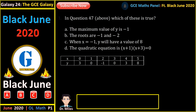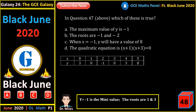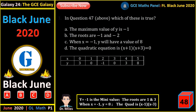In the previous question, which of these is true? The maximum value of y is minus 1 — this is not true because y equals minus 1 is the minimum value. The roots are 1 and 3, not minus 1 and minus 2 as stated. When x is minus 1, from symmetry, y must equal 8. The statement that the quadratic has roots x plus 1 and x plus 3 equals 0 is false — the roots are (x minus 1)(x minus 3) equals 0.